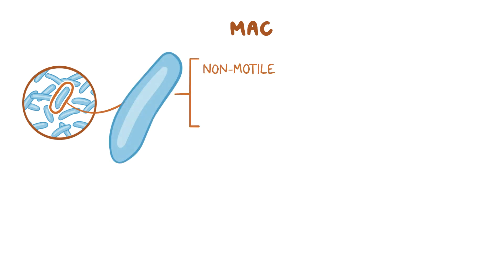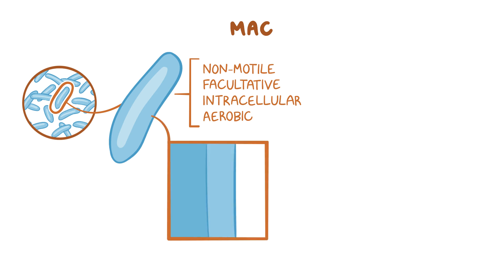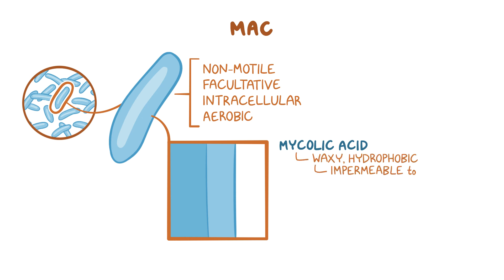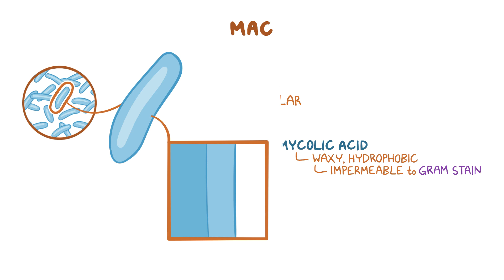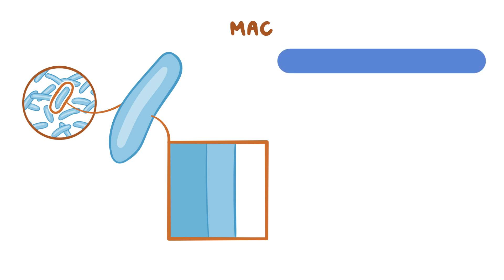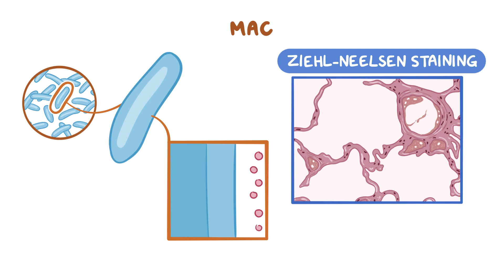MAC are non-motile, facultative intracellular bacteria, which means they can survive both inside and outside the cell. They're also aerobic, which means they need oxygen to survive. They have a high content of mycolic acid in their cell wall, which makes them waxy, hydrophobic, and impermeable to routine stains such as gram stain. So they need special staining methods to be visualized, such as Ziehl-Neelsen staining, which is able to penetrate the waxy mycobacterial cell wall.